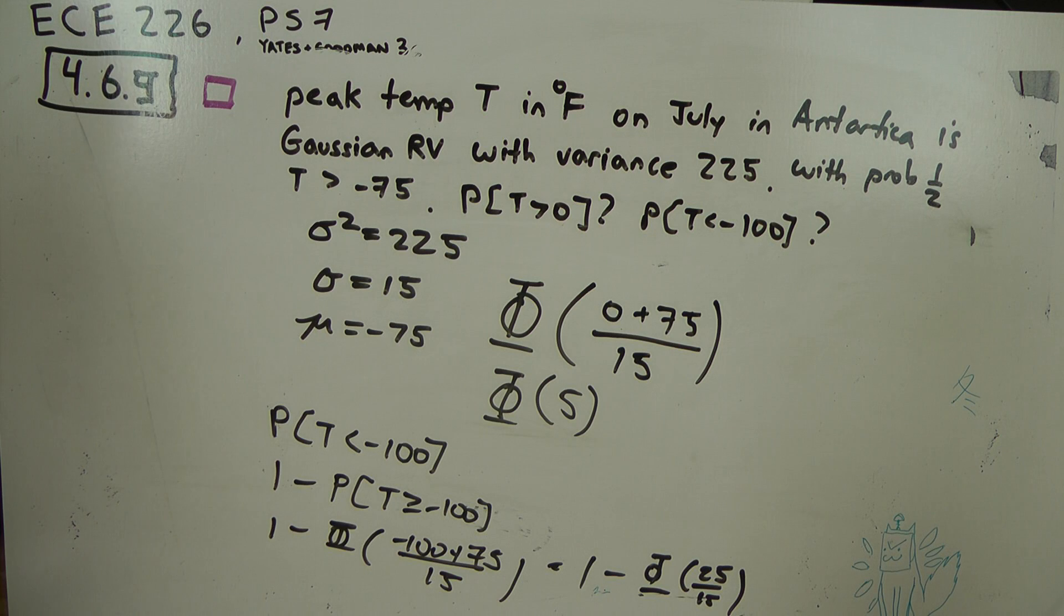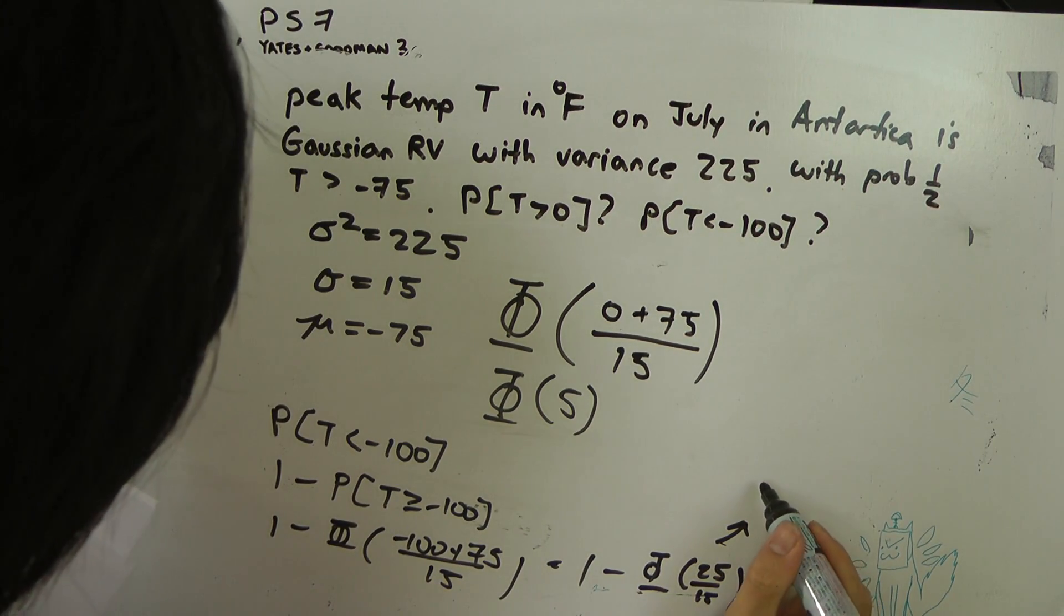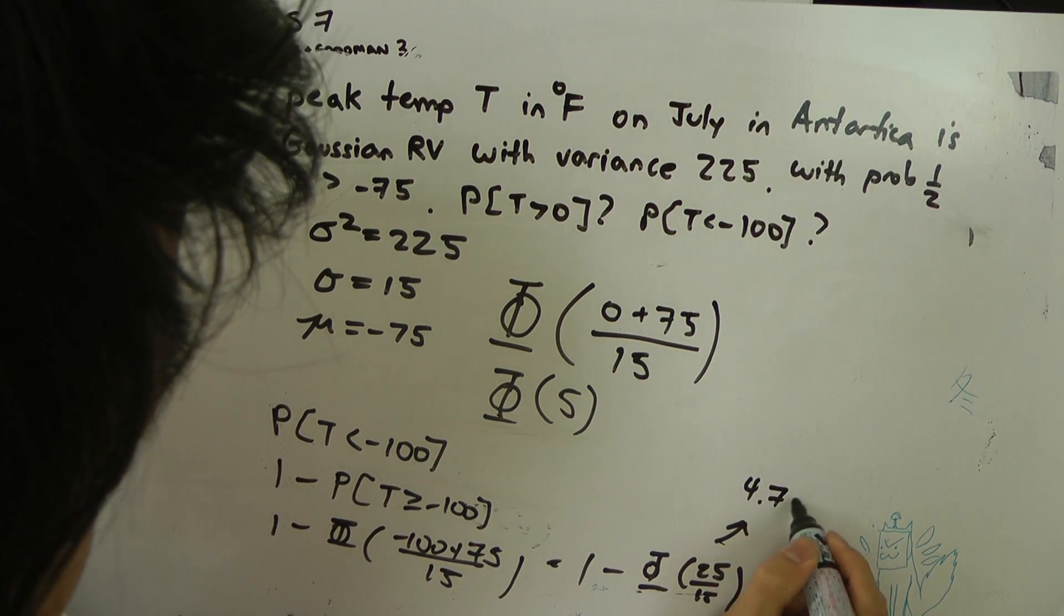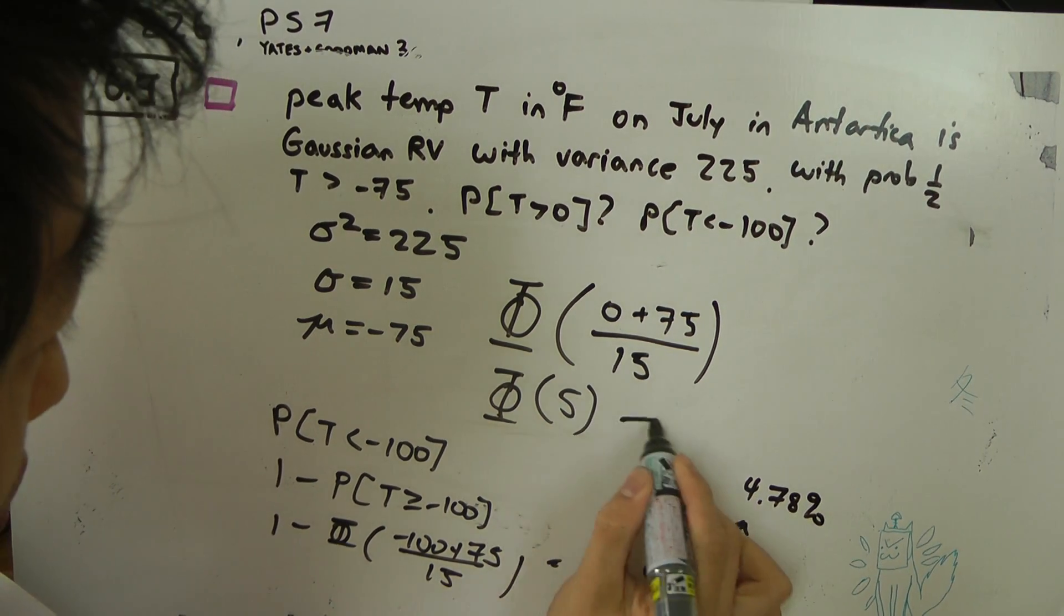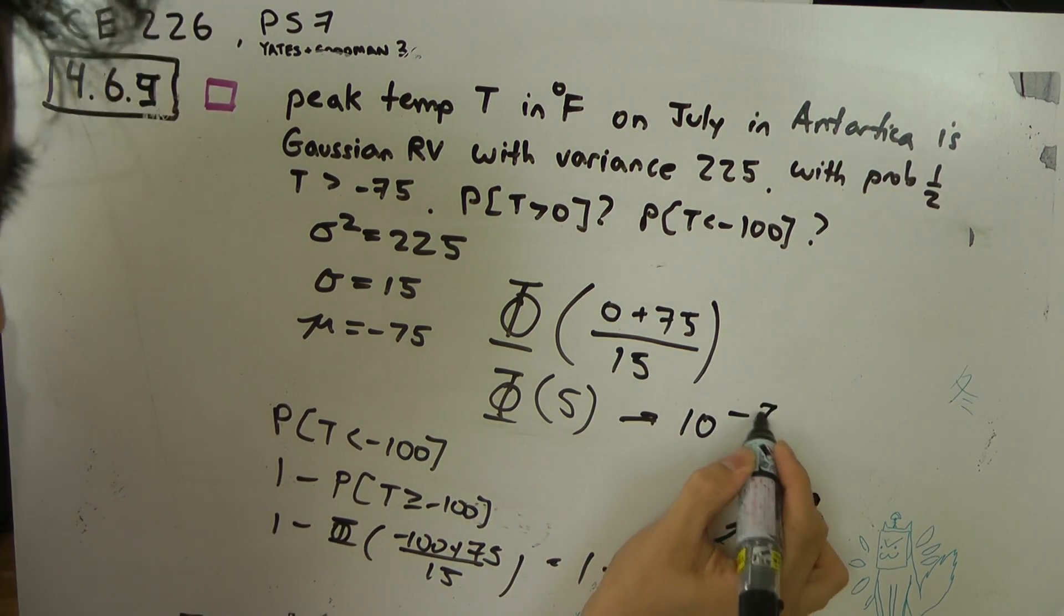But it is not as small as the other number. If you want an approximation, this one's around 4.78% of the time, while this is around something around 10 to the minus 7.